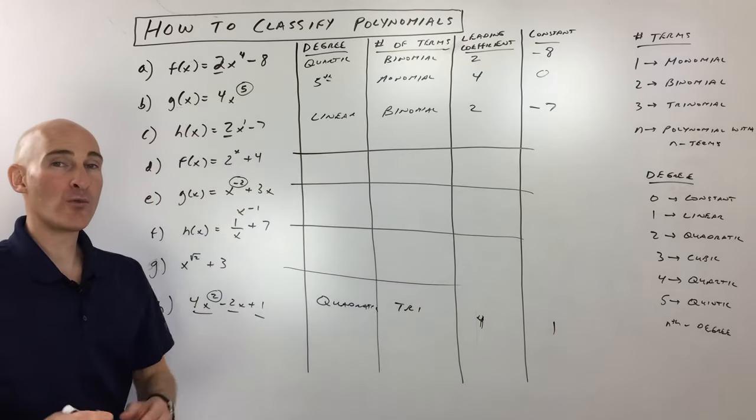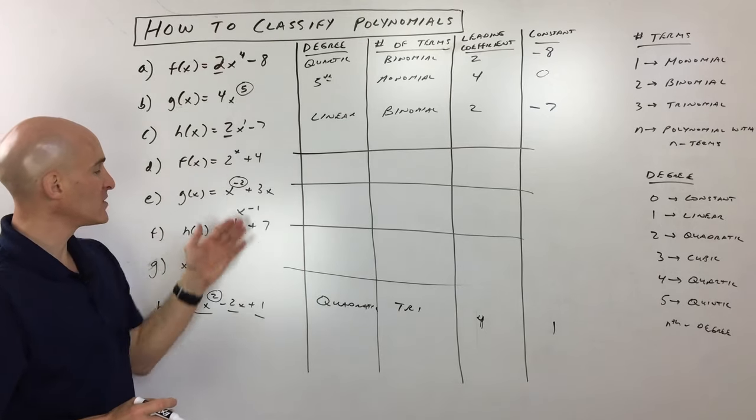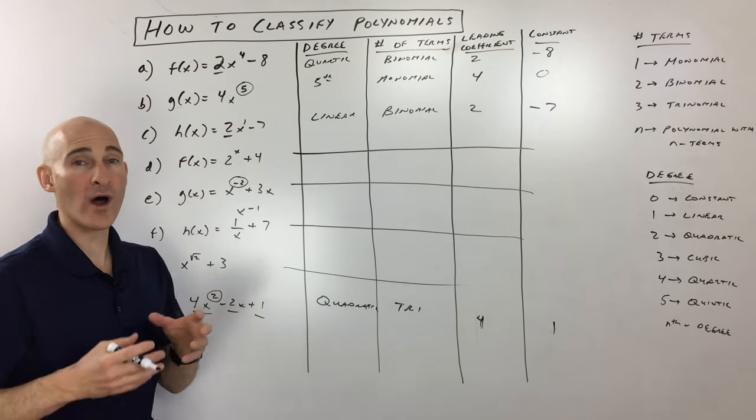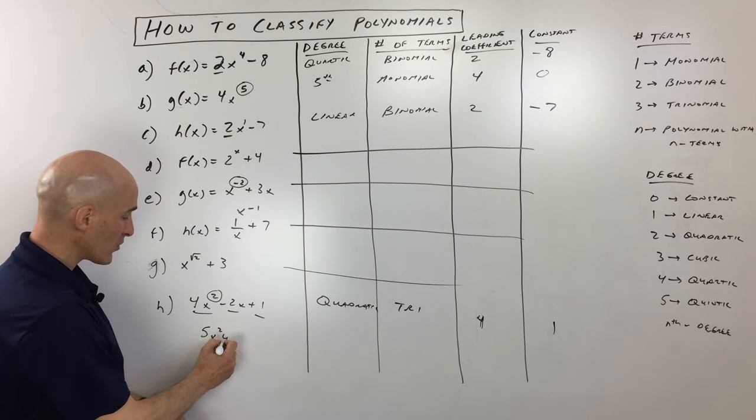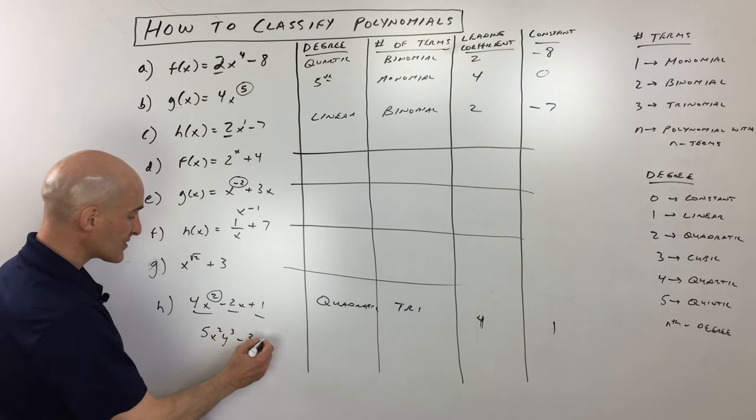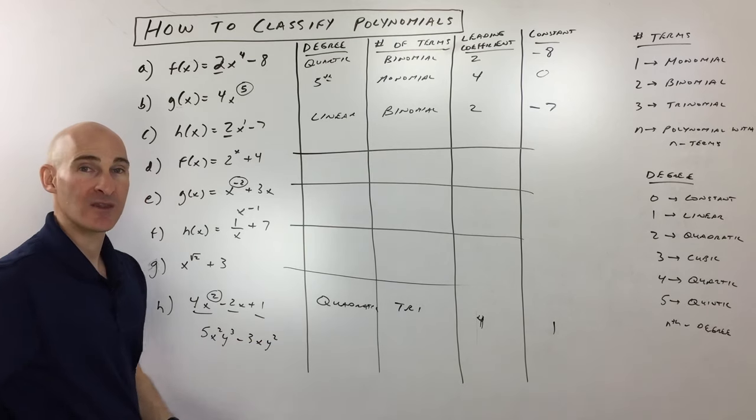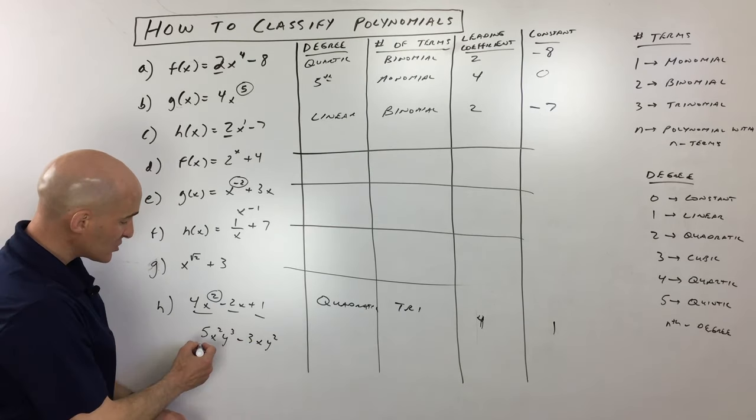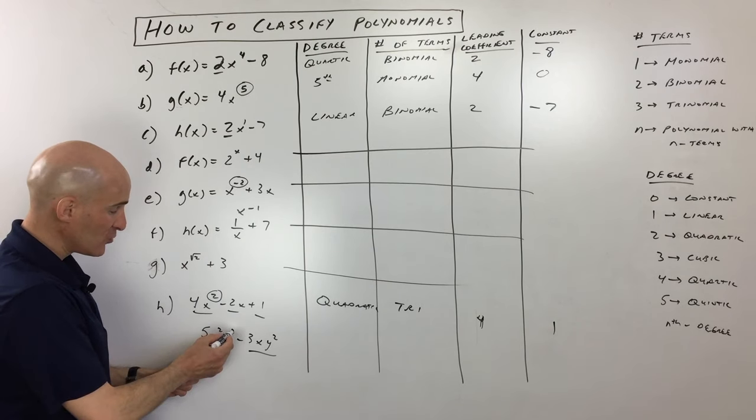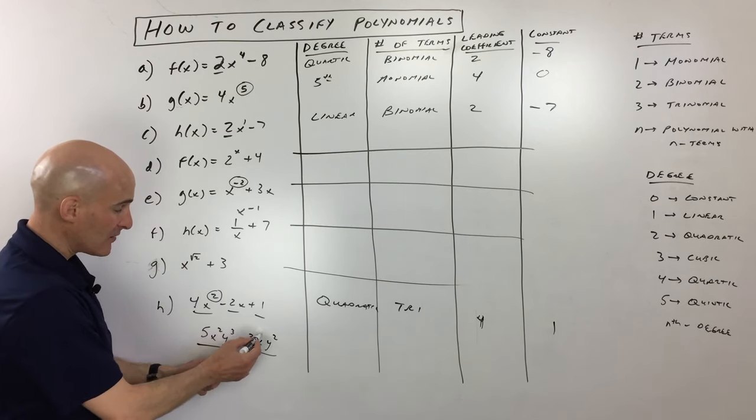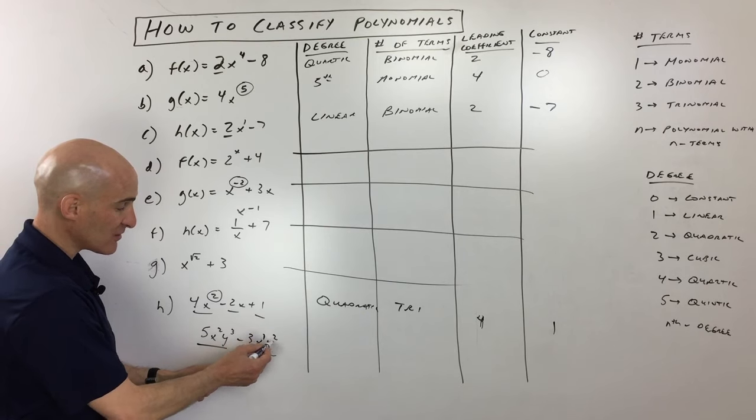And I'm just going to give you one more bonus one here. Notice that all of these ones here, they all have just one variable, just like x. So say, for example, we were to do something like this, 5x squared y cubed minus 3xy squared. Well, here what you want to do, see these terms are separated by minus or plus, you want to add up those exponents. So this is 2 plus 3 is 5. This one is 1 plus 2, which is actually 3.